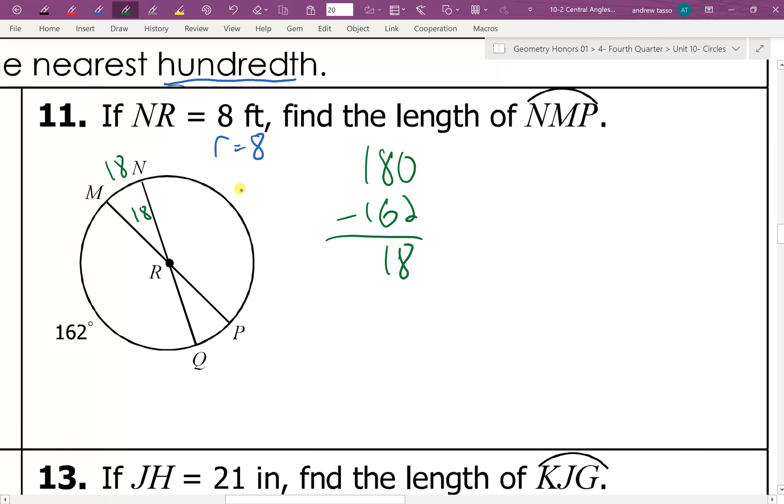Next, we can say that this is 162 since we have here vertical angles. And these are both central angles. So the arcs are equal to the angles. Similarly, we can say this would be 18 because of vertical angles. And then this arc would also be 18.